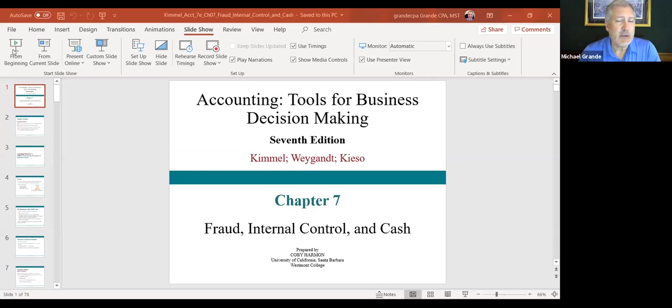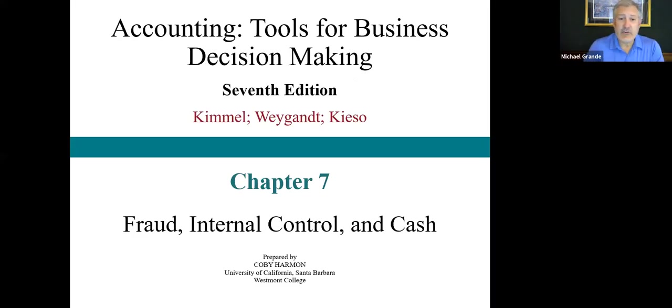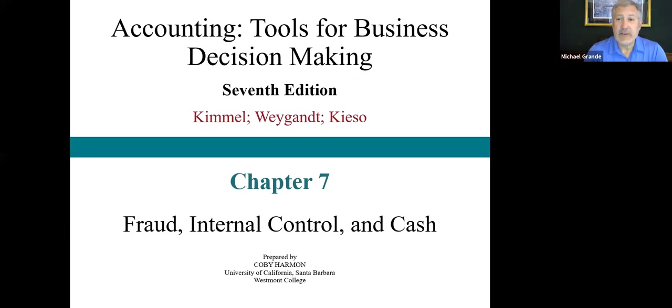Today's lecture is from chapter seven. Chapter seven of Kimmel is talking about internal control and cash management. Chapter seven covers fraud, internal control, and cash. As you can well imagine, cash in its many different forms is suspect to being stolen by disgruntled employees, and we need to protect it. We'll spend some time at the beginning of this lecture to talk about fraud and internal control.